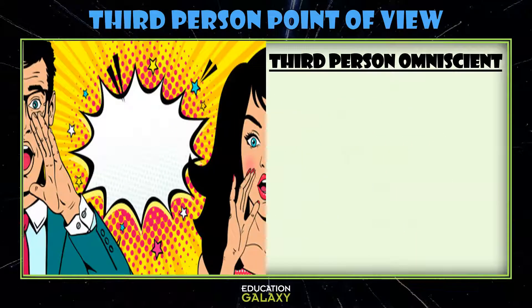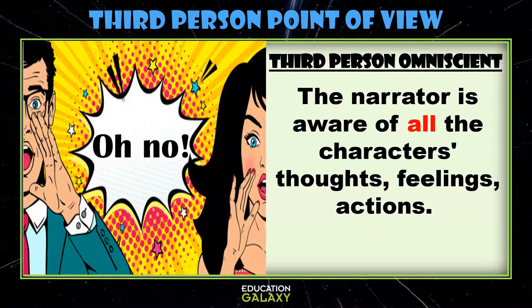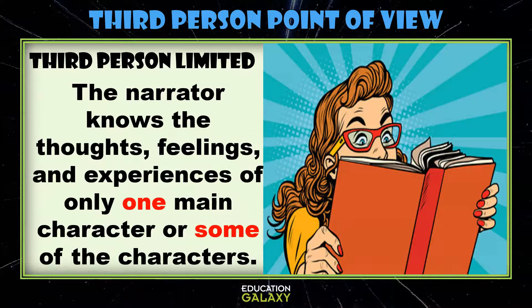There are two different types of third person point of view. One is third person omniscient. This is when the narrator is aware of all the characters' thoughts, feelings, and actions. They are all knowing. Then there is third person limited. This is when the narrator knows the thoughts, feelings, and experiences of only one main character or some of the characters, but not all of them.